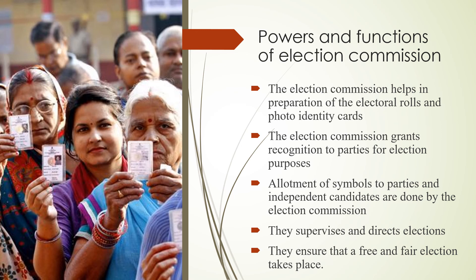Powers and functions of the Election Commission: The Election Commission helps in the preparation of electoral rolls — that is, the list of candidates to be elected — and issues photo identity cards. The Election Commission grants recognition to parties for election purposes and handles allotment of symbols to parties and independent candidates. For example, the Congress symbol is the hand and the BJP symbol is the lotus. The Election Commission supervises and directs elections to ensure that free and fair elections take place.